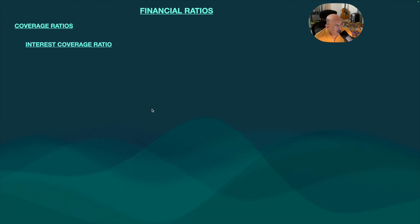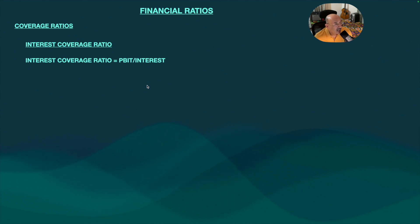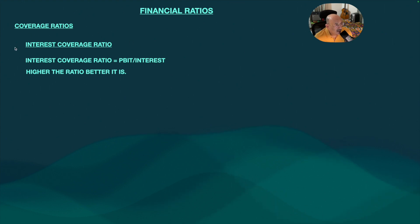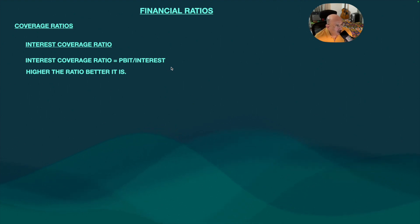Now, coverage ratio. Interest coverage ratio: if the company has taken a lot of loans, the profit generated should be able to cover the interest payable. Interest coverage ratio is profit before interest and taxes — PBIT — divided by the interest the company has to pay. Higher the interest coverage ratio, the better.